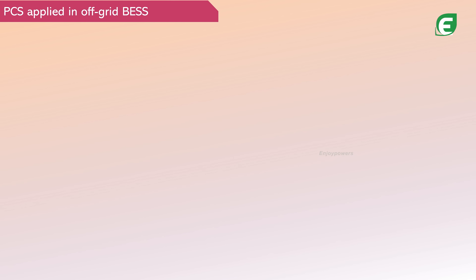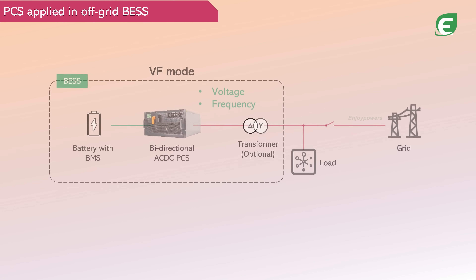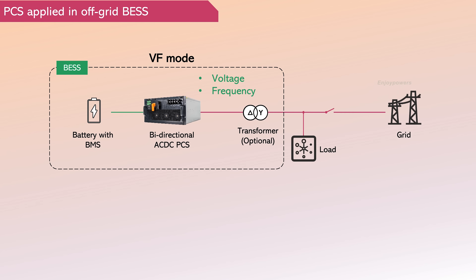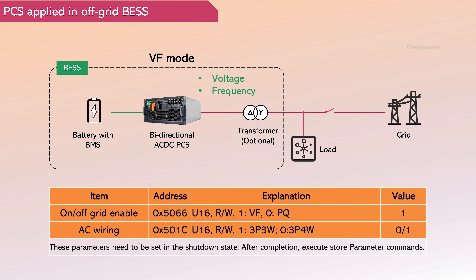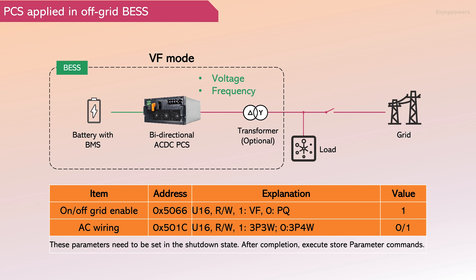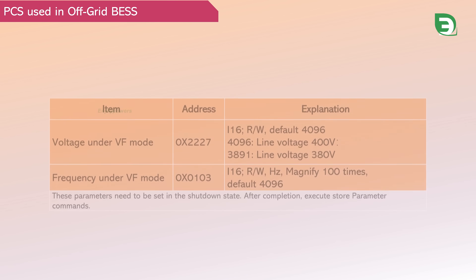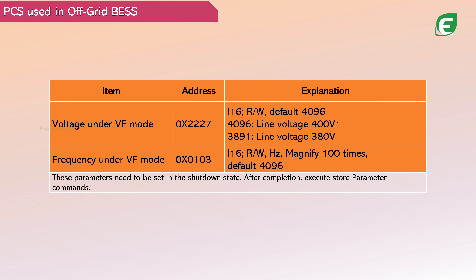EnjoyPower's PCS can also be applied in off-grid VF mode to provide backup power for important loads. In this scenario, the PCS should be set to VF mode, and 3P3W or 3P4W selected based on the AC side configuration. These parameters need to be set in the shutdown state. After completion, execute store parameter commands. In PCS off-grid mode, the voltage and frequency provided by the PCS need to be set.